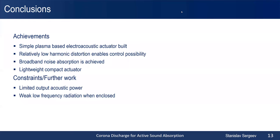Summing up, a simple plasma-based electroacoustic actuator was developed and built, which relies on the corona type discharge. We obtained rather satisfactory acoustic performance for active sound control. Broadband noise absorption was achieved using this type of actuator and the hybrid absorption technique. The actuator itself is rather lightweight and compact, which is very nice for some applications. Among the constraints, we have limited output acoustic power and quite weak low-frequency radiation when the actuator is enclosed. Thank you for listening, and if you have any questions, please feel free to ask.